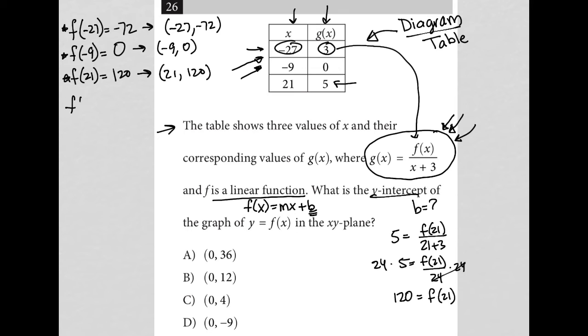So if I then take that along with f of x equals mx plus b, I can solve for m, because m is just y2 minus y1 over x2 minus x1. Which ones would I choose? I'd go with these two guys. So I'd have 120 minus 0, and then 21 minus negative 9. So altogether that would give me 120 over 30.